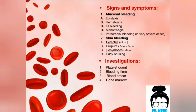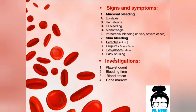A patient with a primary hemostasis disorder will present with bleeding signs and symptoms. The patient might bleed from mucosal surfaces — they will have epistaxis, hematuria, GI bleeding, menorrhagia, and intracranial bleeding. Intracranial bleeding only happens in very severe cases, for example when the platelet count is very low. The patient will also have skin bleeding: petechiae, purpura, and ecchymosis, which vary depending on size. The patient will also have easy bruising.